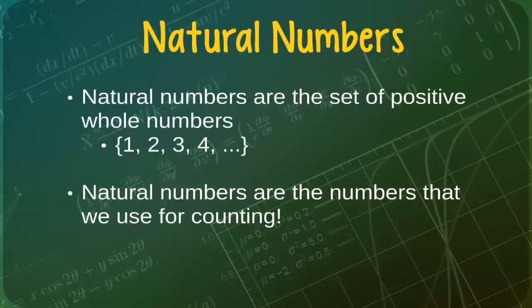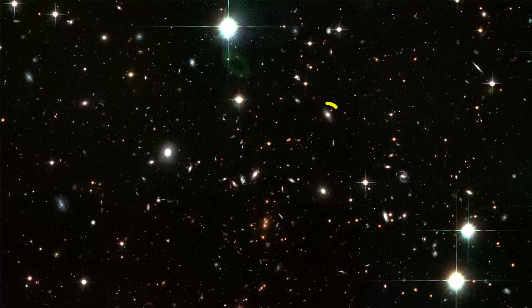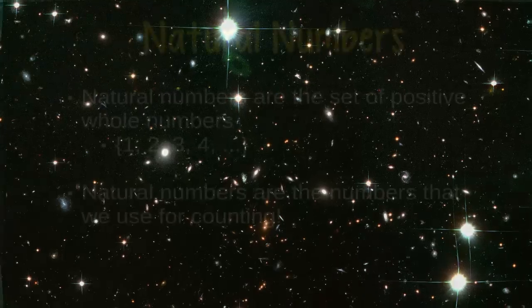Imagine, for example, that you are trying to count all of the stars in the night sky. Using the natural numbers, you would begin by counting 1 star, and then 2 stars, and then 3 stars, and so forth. Note that all of these numbers are whole numbers. In the night sky, there is no such thing as half a star.